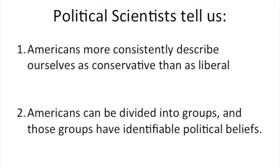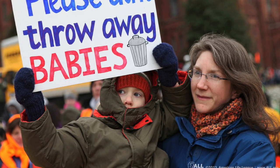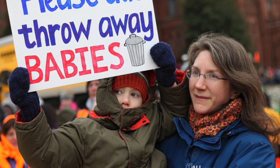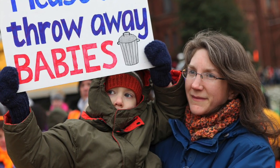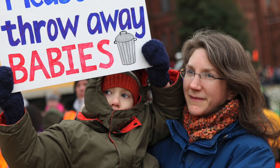Political scientists tell us a couple of things that are useful here. Number one, Americans more consistently describe ourselves as conservative than as liberal. Number two, Americans can often be divided into groups, and those groups have identifiable political beliefs. In other words, they tend to vote different ways.